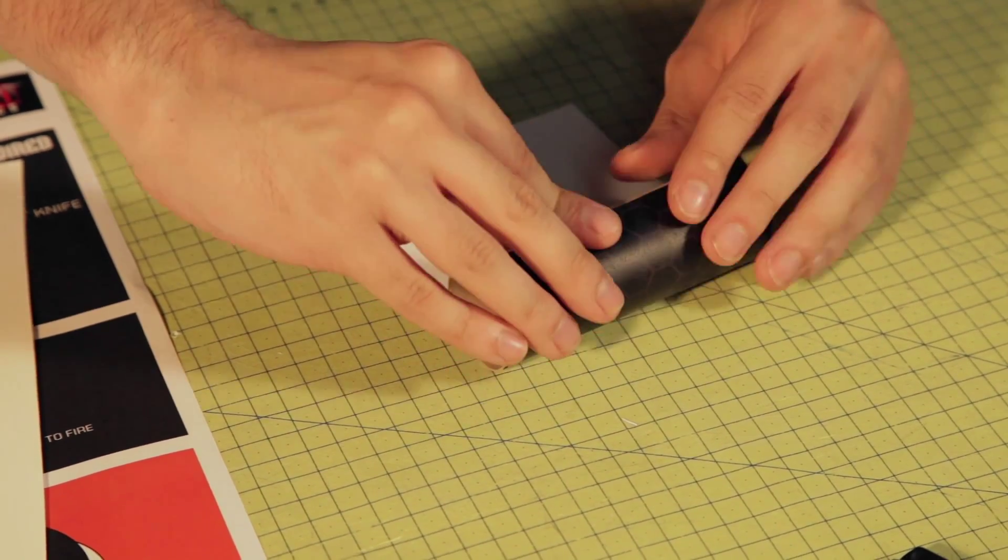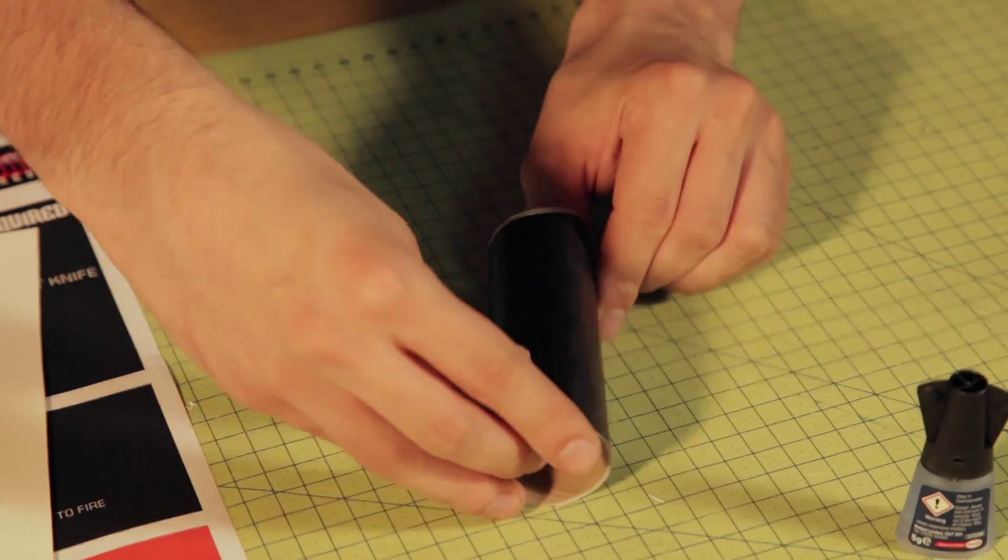Roll figure 1 around your cardboard tube, gluing the edge to secure. This makes up the body of your cannon.